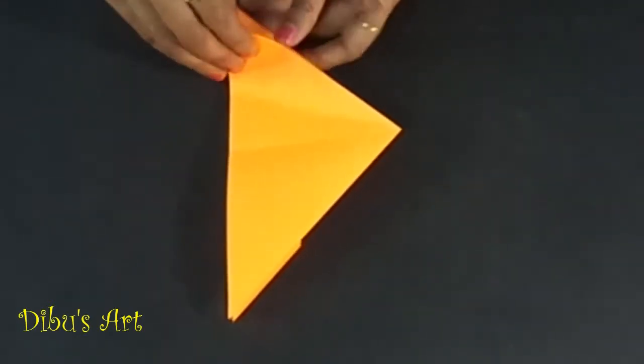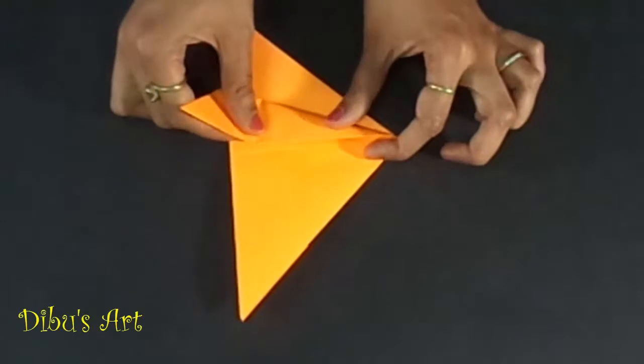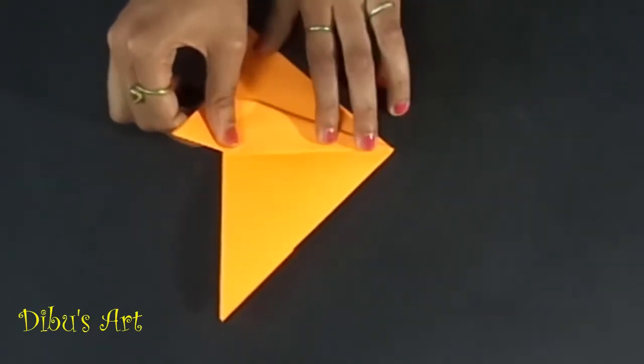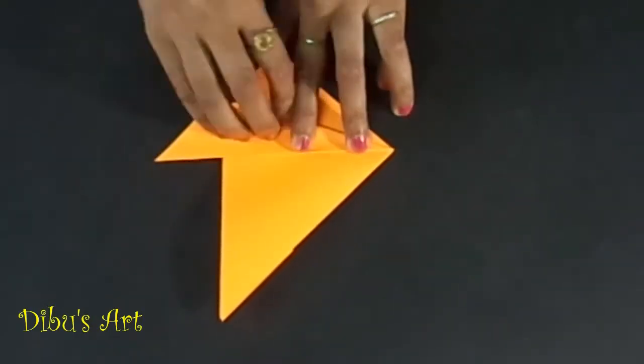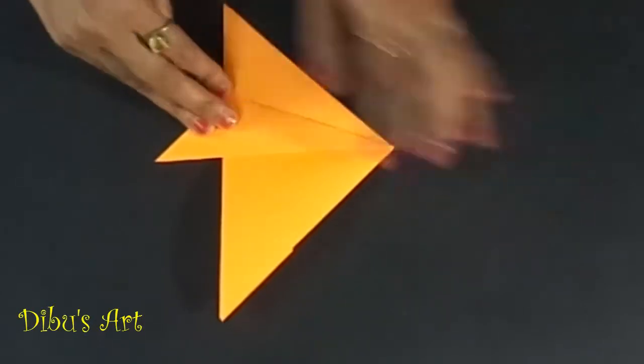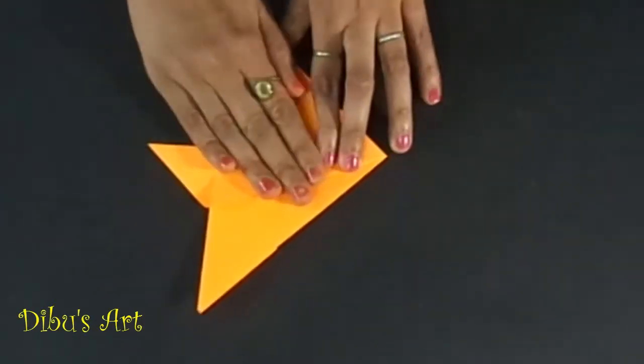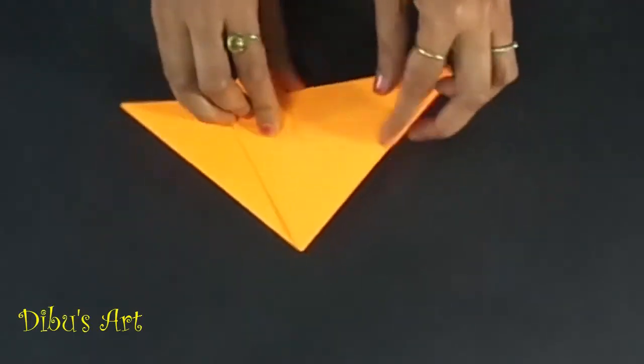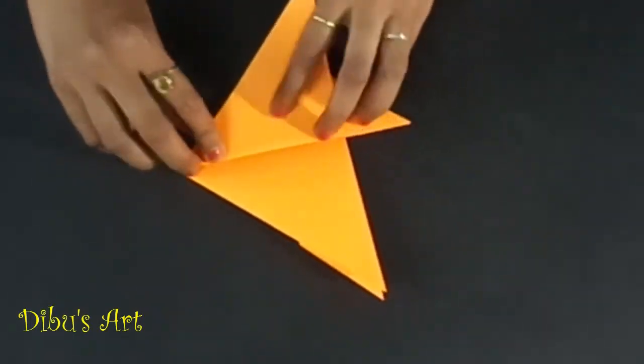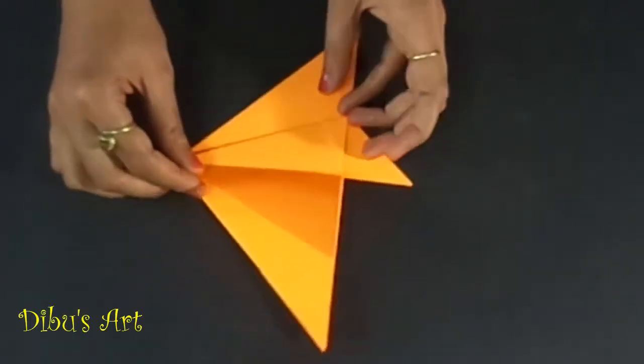Reverse the right side flap to left end, fold it such that edge of the triangle meets the center crease. Repeat the process with left wing.